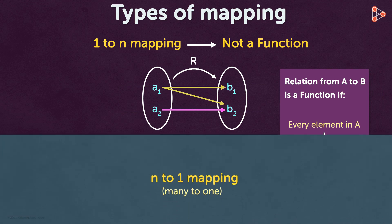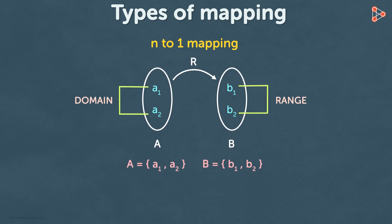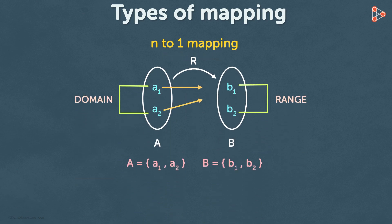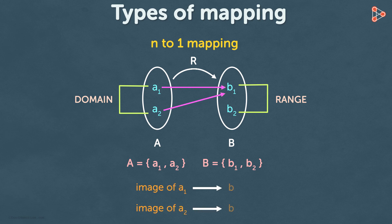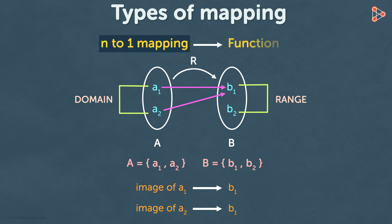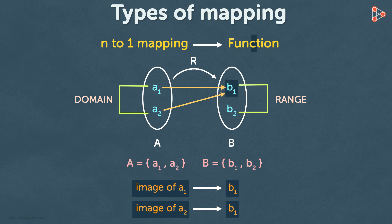Let's move on to the third type of mapping. Here's the arrow diagram for many to one mapping. Notice that A1 and A2 both have the same image B1. If the mapping is many to one, then the relation is a function. This is because every element in set A has one and only one image in set B — it doesn't matter even if it's the same image. The relation will be a function in this case.